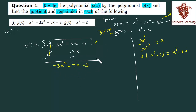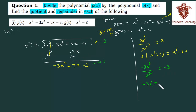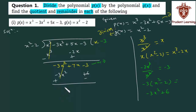अब यह minus 3x square plus 7x minus 3 आपका new dividend है. फिर से same procedure — dividend के highest degree term, which is minus 3x square, उसको divide करेंगे divisor के highest degree term x square से. तो आपको मिलेगा minus 3 — यह quotient का एक और term. अब इस minus 3 को multiply करेंगे divisor से: minus 3 times (x square minus 2) = minus 3x square plus 6. इसको subtract करने पर minus of minus plus हो जाएगा, तो minus 3x square cancel. 7x और minus 3 minus 6 will give you minus 9. तो हमारे पास बचा 7x minus 9.